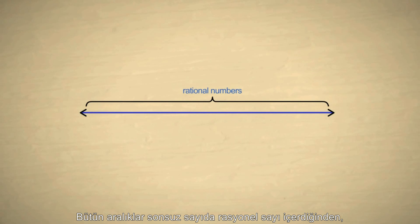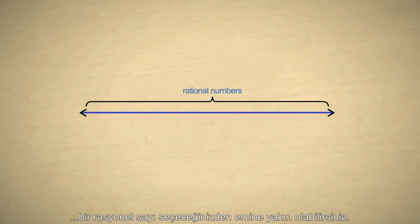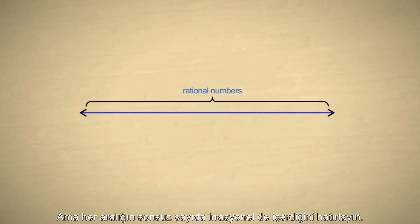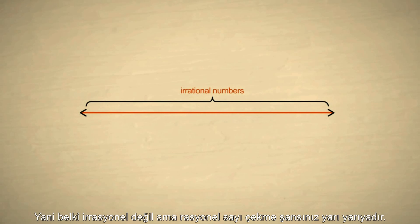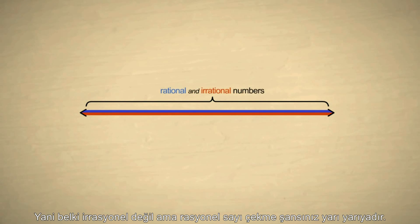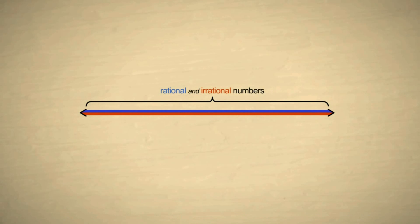Since any interval contains an infinite number of rational numbers, you might think that you would almost certainly pick a rational number. However, remember that every interval also contains an infinite number of irrational numbers. So maybe the chances would be 50-50 that you would pick a rational number, as opposed to an irrational number. However, this is not the case.